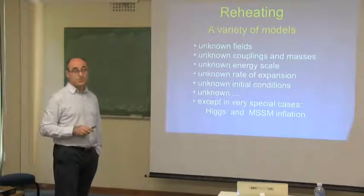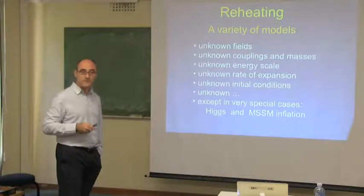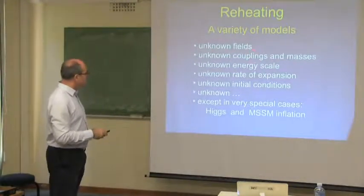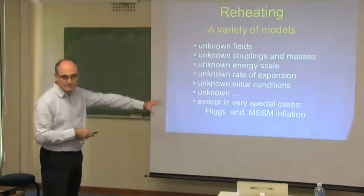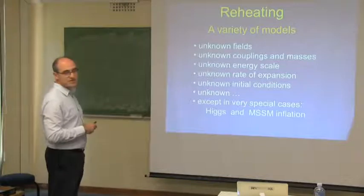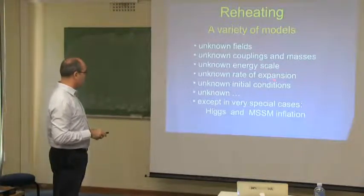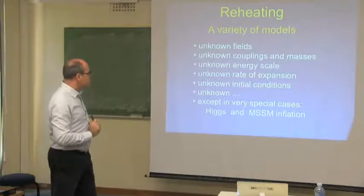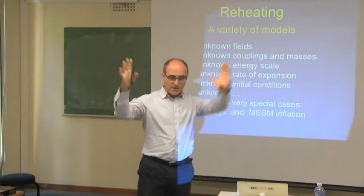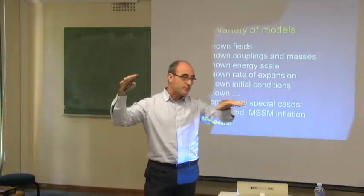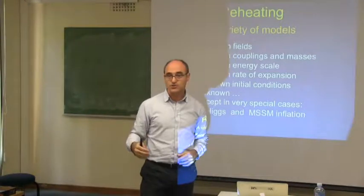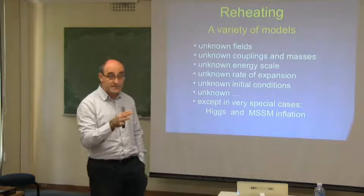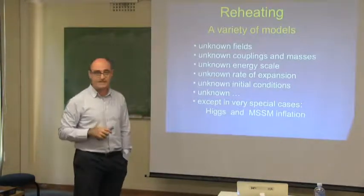The only thing we know is that the inflaton's energy density is dominating during some period of the expansion of the universe. So there are unknown couplings and masses in general. We don't know the energy scale of inflation, nor the rate of expansion or equation of state at that time. The initial conditions are also rather unknown because we only probe through the CMB and large-scale structure the very large scales — we are not probing the last few e-folds of inflation. Those properties will affect the conditions that determine preheating after inflation. There are many unknowns, except in very special cases.